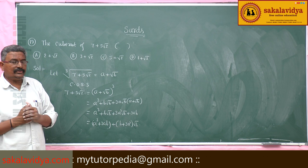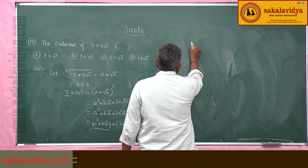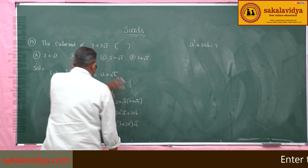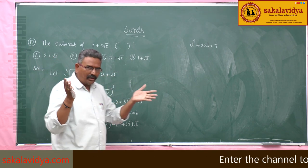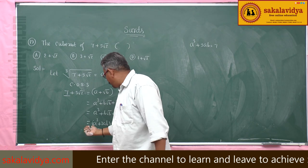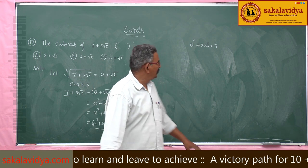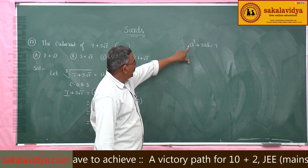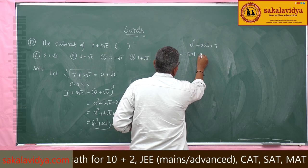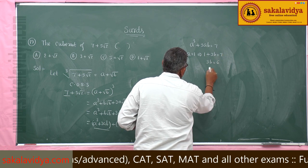But this is a competitive entrance examination. So neglect all those steps — just remember in your mind that the cube root of (a plus root b) is (a plus root b), and remember only this first step: a cube plus 3ab is equal to the rational part. So from here only we start. So, a cube plus 3ab is equal to 7.